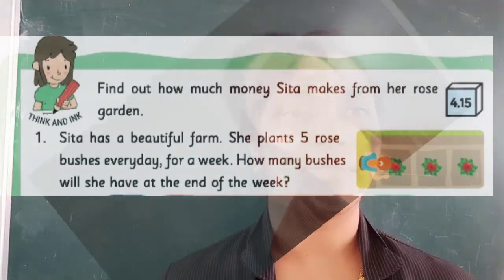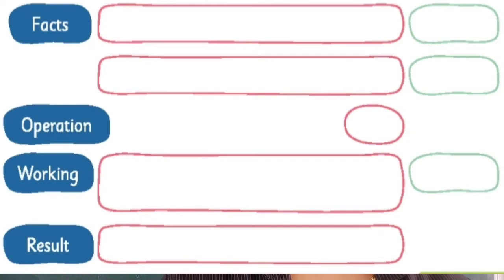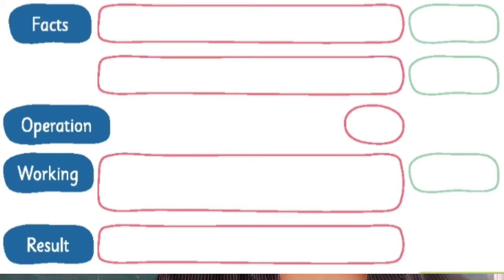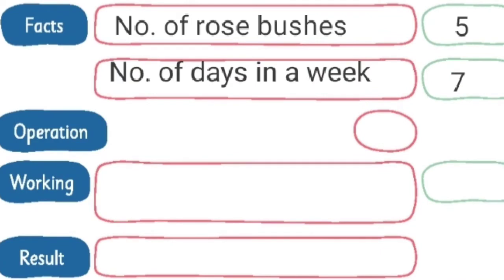When we do a word problem, we follow the steps: facts, operation, working, and result. Here also, we have to do those steps. The first step is facts. The information given is that she plants five rose bushes every day. We have to find out the number of rose bushes at the end of the week. So we can write the facts: number of rose bushes — five. She plants five rose bushes every day.